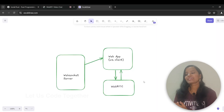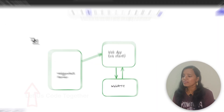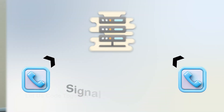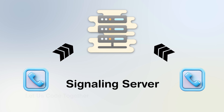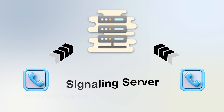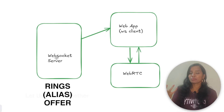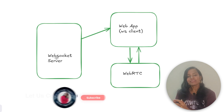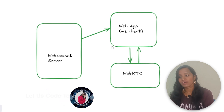Here you can see a quick sketch of the application. In Rust, we have a WebSocket server, which acts as a signaling server — handling calls, answers, and offers. In this section, we will create a WebSocket server.